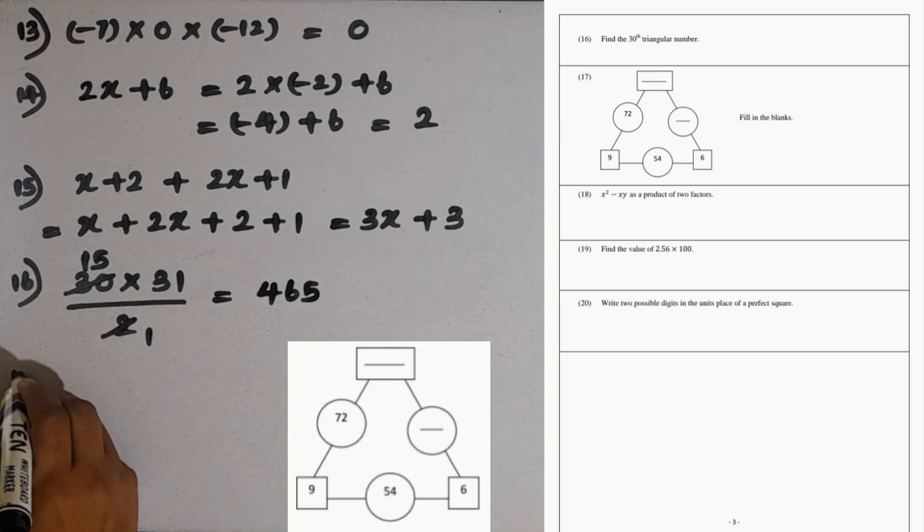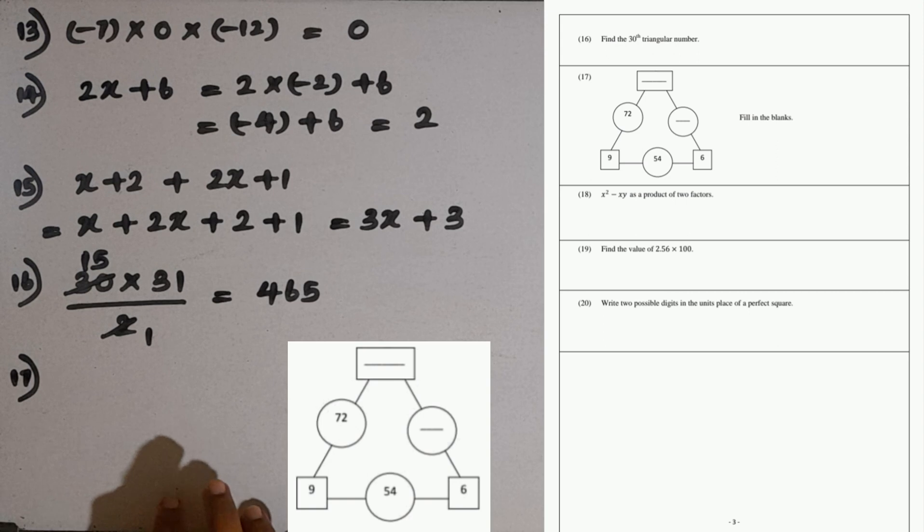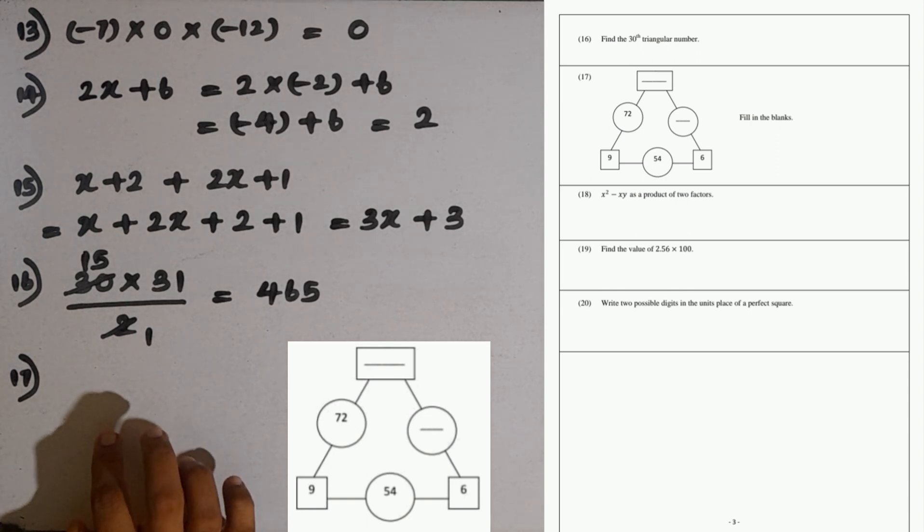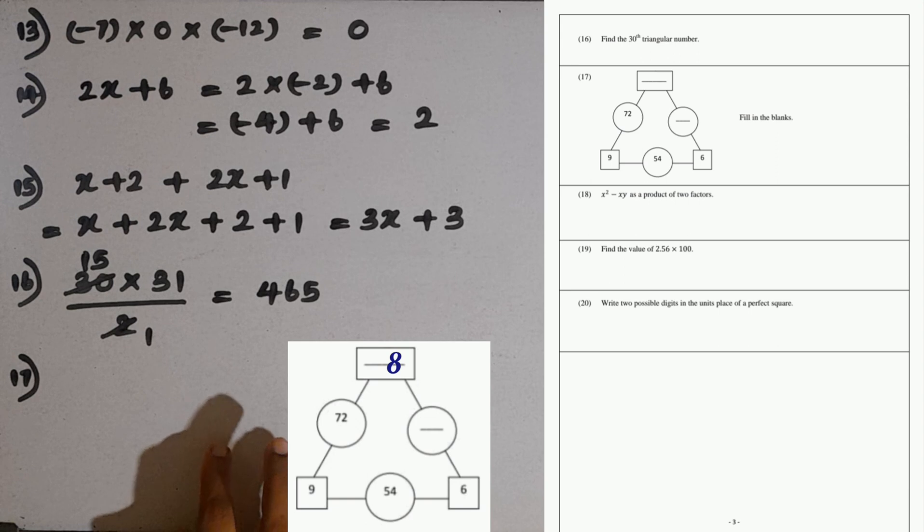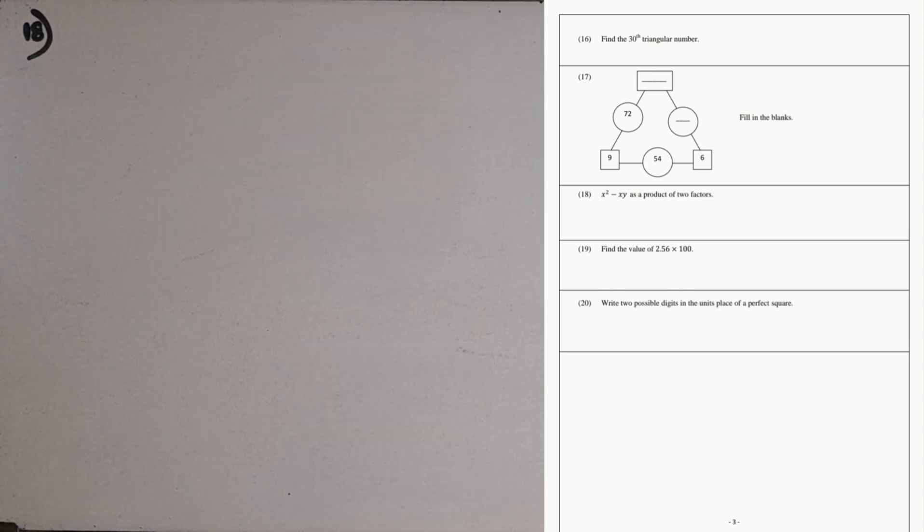Then question number 17. We are given this diagram. It has a relationship here. In the middle we have 54, then 9 times 6 is 54. So here we have 72, so to get 72 we have to multiply 9 by 8. Then here the answer is 8. Then we have 8 and 6 in the middle, multiplication of these two numbers, that is 48. We can fill like this.